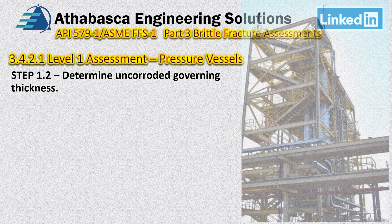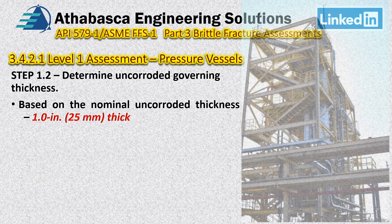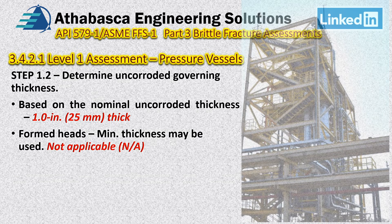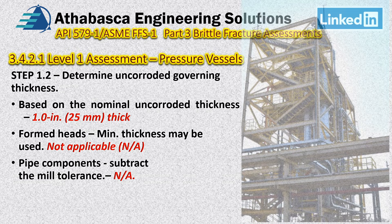We continue to Step 1.2 — determine the uncorroded governing thickness. The nominal uncorroded thickness for this vessel is 1 inch or 25 millimeters. We check that we're not working on formed heads, as otherwise we'd use the minimum thickness, but that's not applicable here. We also don't have a piping component — we have a shell — but if we did, we would be subtracting the mill tolerance.